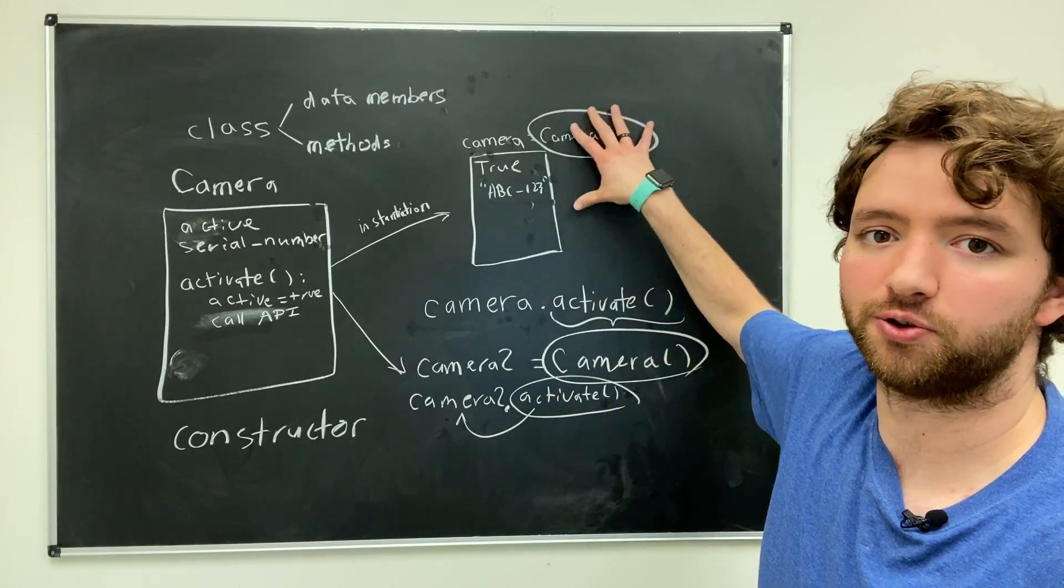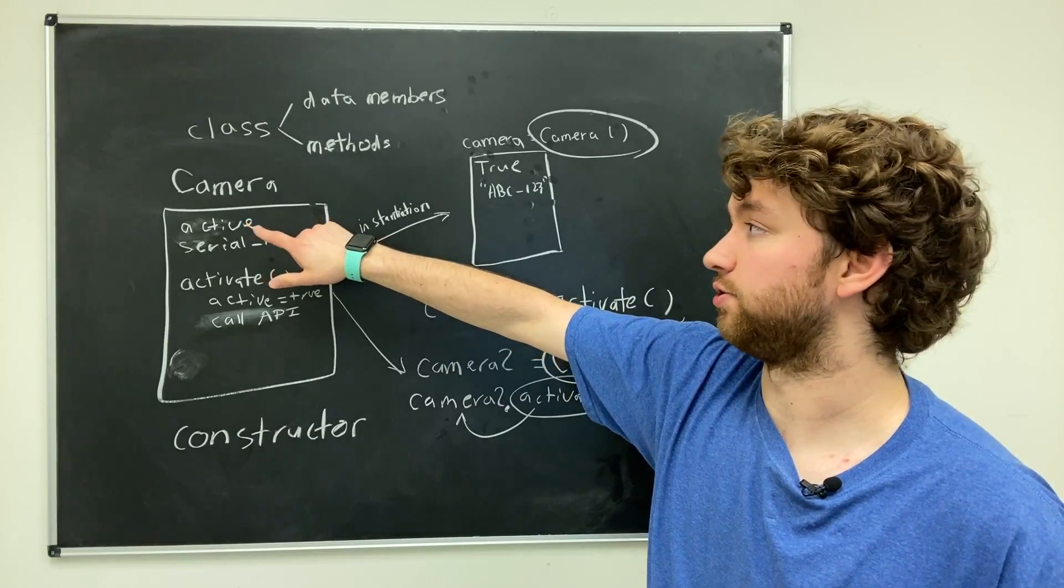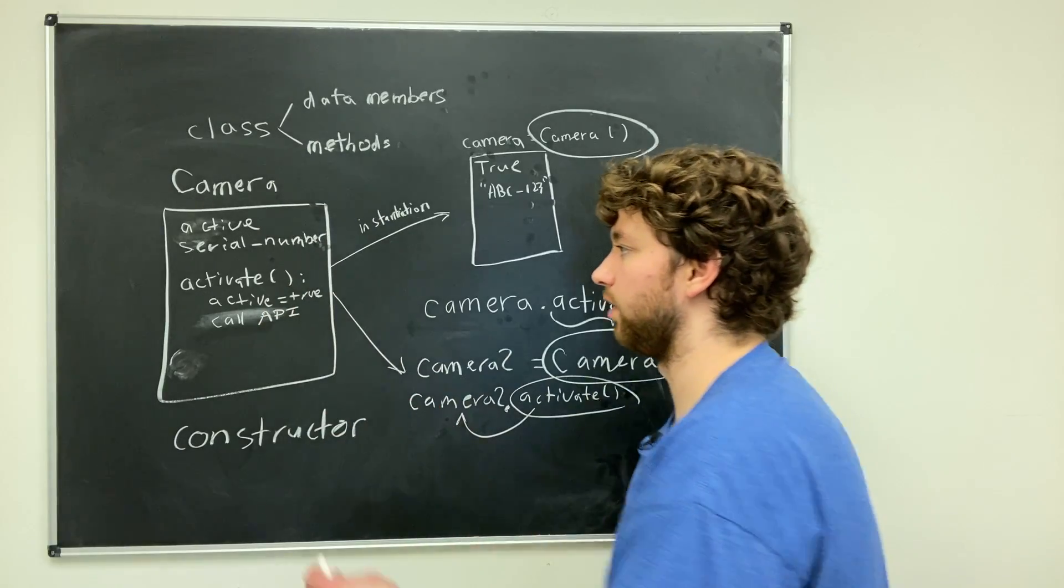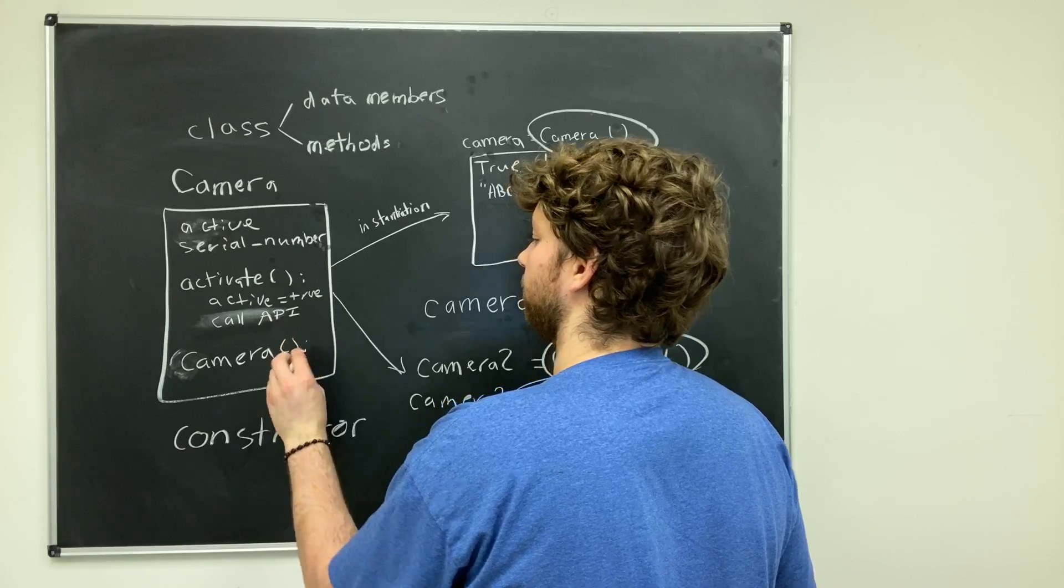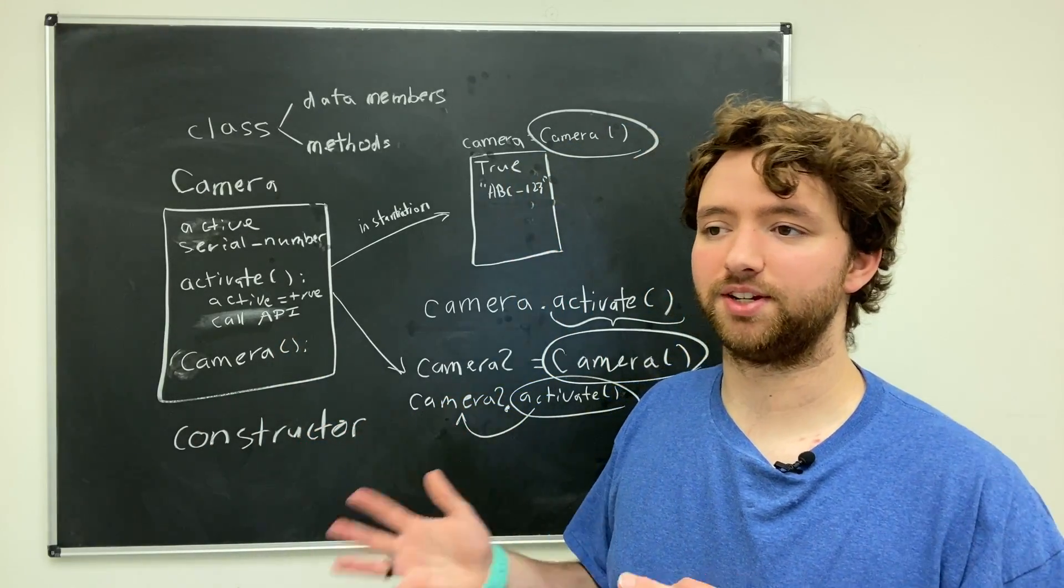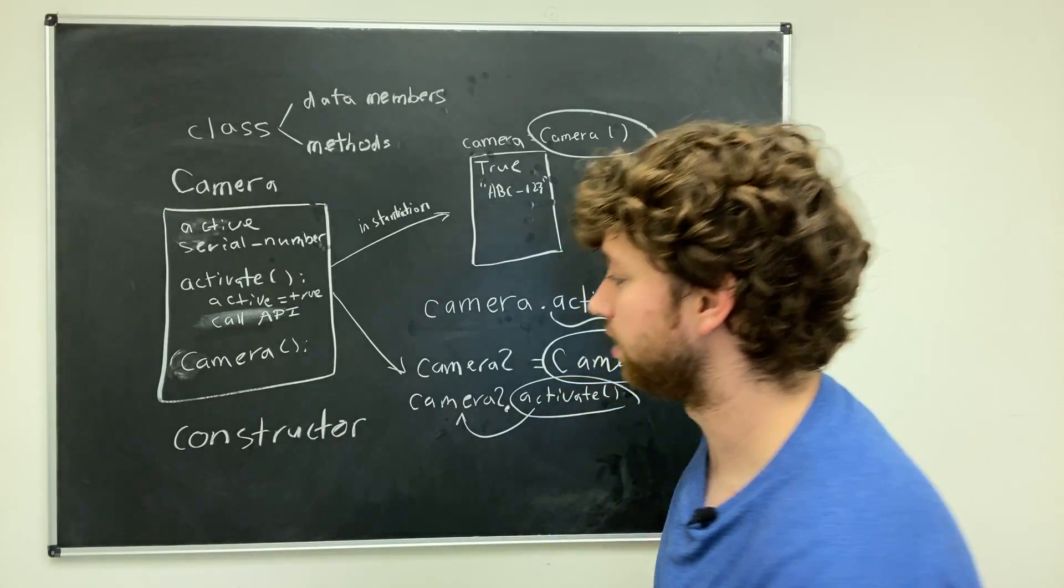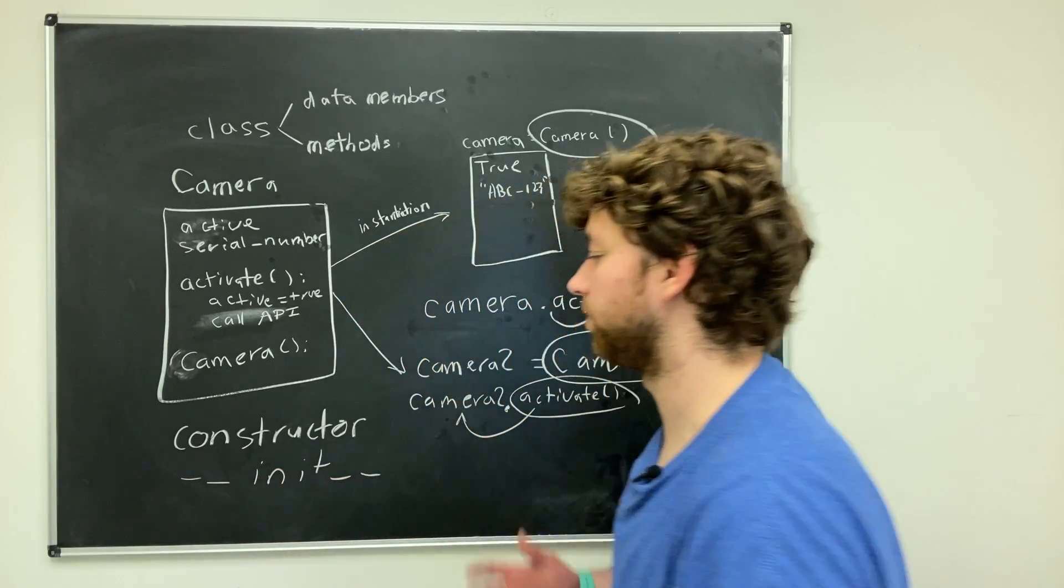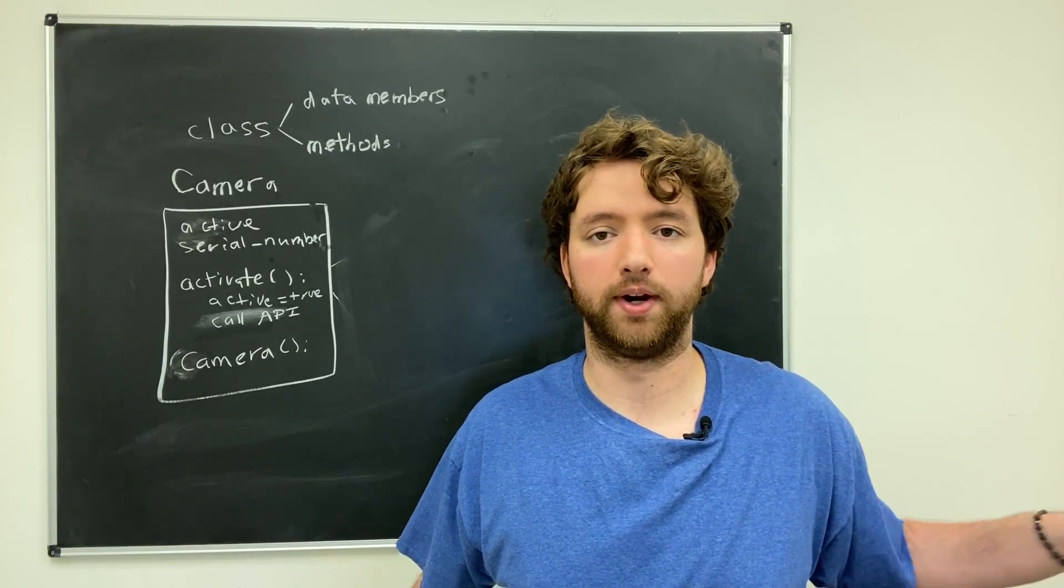How would you create this? Most programming languages, you just create a method that matches the class name with no return, so it looked like this: camera. Then you would define the code in there. I'm getting into pseudo code here because it's going to be different from language to language. Inside of Python we actually have a special method we need to use, and that is __init__, which pretty much acts as the same thing inside of Python.